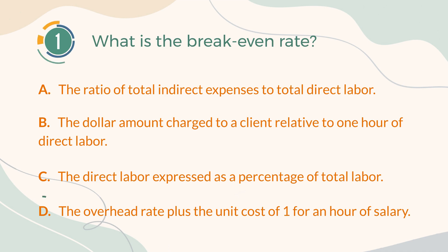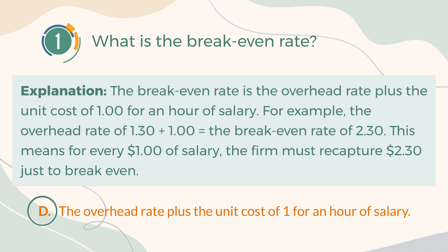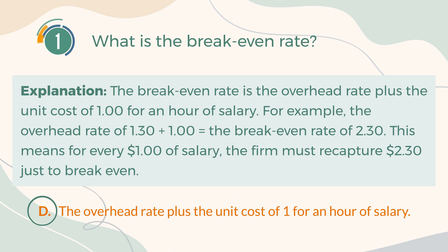The correct answer is D: the overhead rate plus the unit cost of one for an hour of salary. The break-even rate is the overhead rate plus the unit cost of one for an hour of salary. For example, the overhead rate of 1.3 plus one equals the break-even rate of 2.3. This means for every $1 of salary, the firm must recapture $2.30 just to break even.